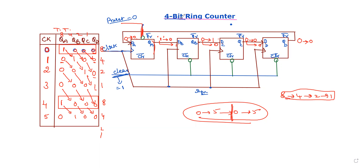If you have 5 bits, you will use 5 flip-flops. The last flip-flop feeds back to the first flip-flop. So a 5-bit ring counter will give you 5 unique sequences.